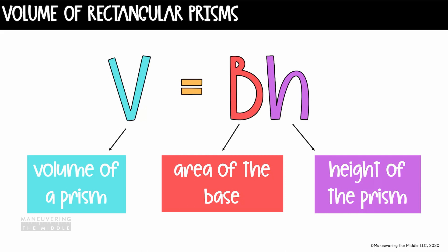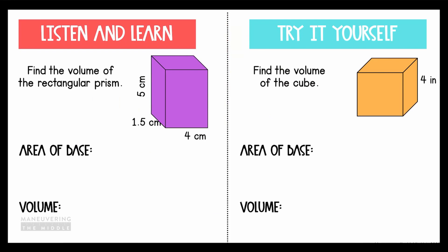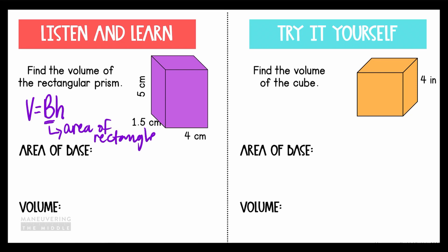So let's go ahead and look at a few examples. Find the volume of the rectangular prism. We see here that we have a rectangular prism, so we know we are going to use the formula V equals capital B times H. I know that capital B represents the area of the base — the area of the rectangle. So let's go ahead and find the area of the base. Capital B equals the area of a rectangle, found by base times height, or in this case 4 times 1½ centimeters, which equals 6 centimeters squared.